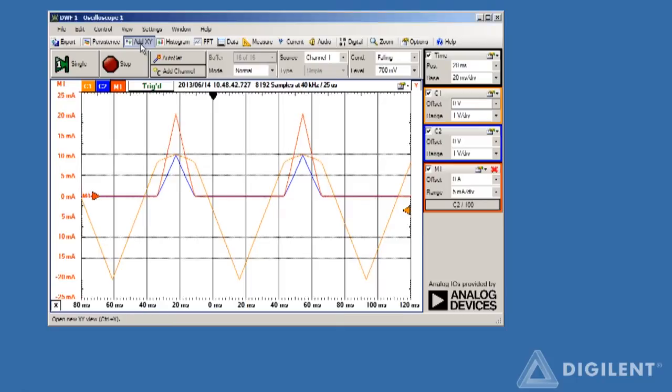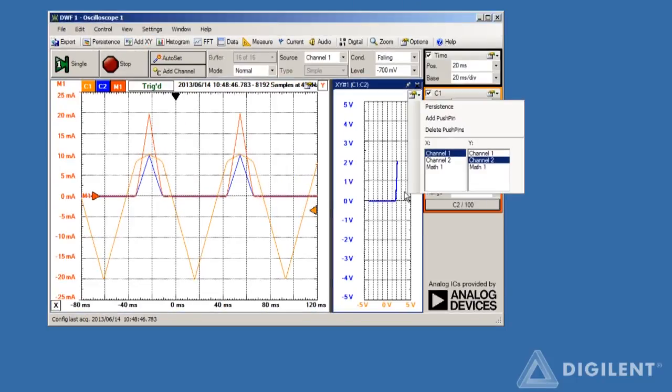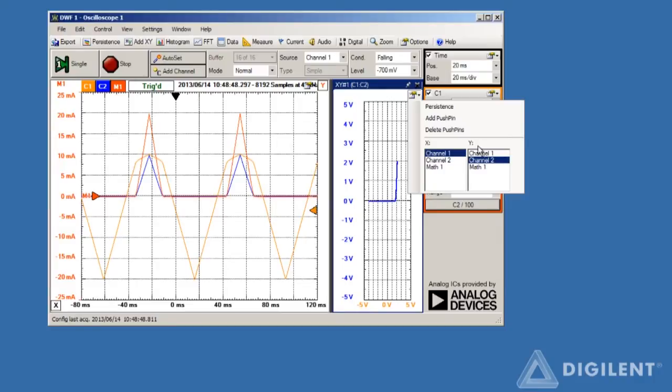To create an XY plot, click on the add XY button. An XY plot window opens with a dialog box which allows us to choose the channels to put on the X and Y axes of the plot. We'll put the diode voltage channel 1 on the X axis and the diode current, math channel 1 on the Y axis.